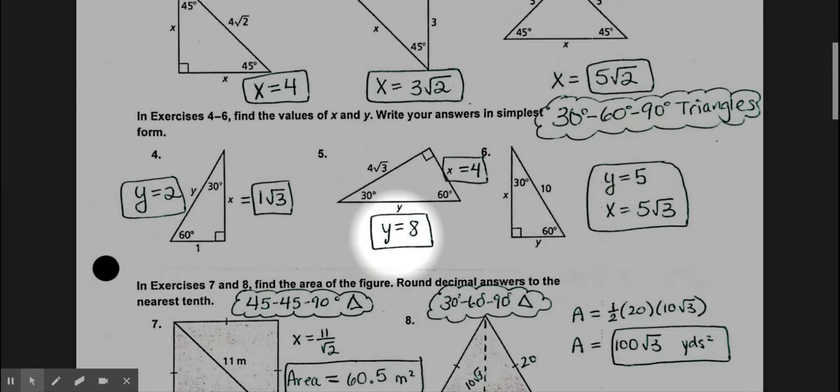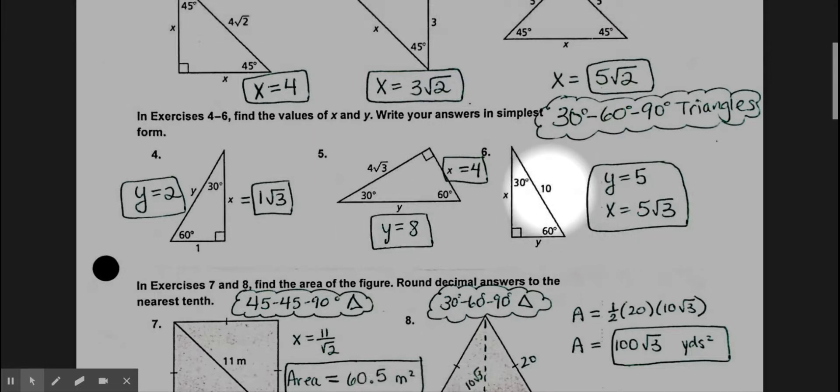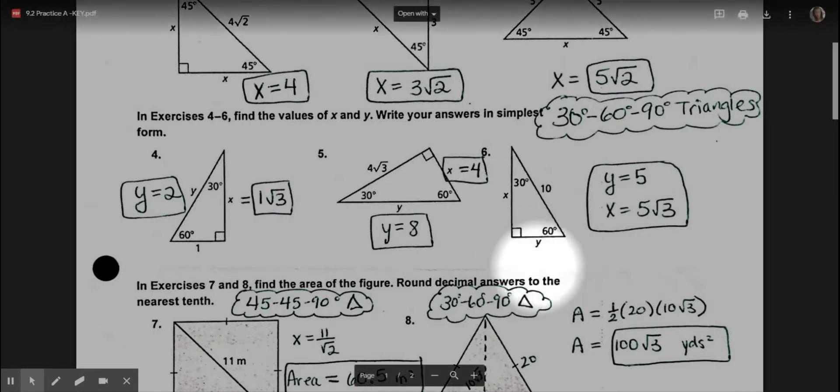Okay, in number six they've given us the hypotenuse. This is the most complicated kind: when you start with the hypotenuse, you have to divide by 2 to get the short leg. So 10 divided by 2 would be 5, that's why y equals 5. And then to get the long leg, multiply by radical 3.